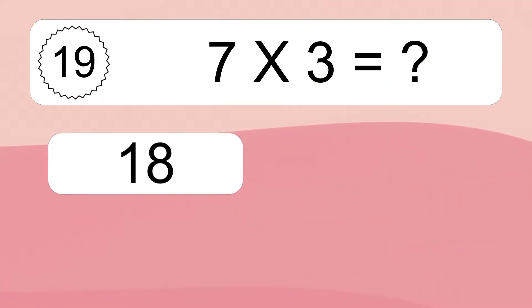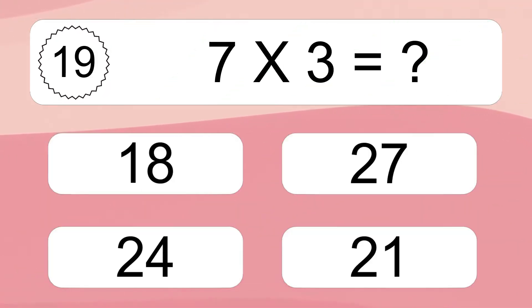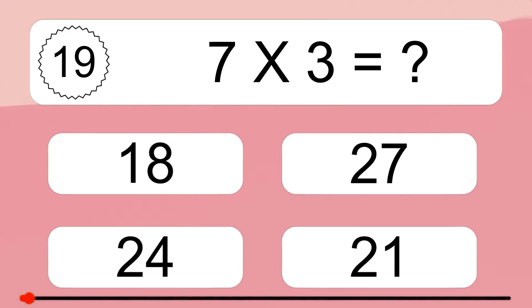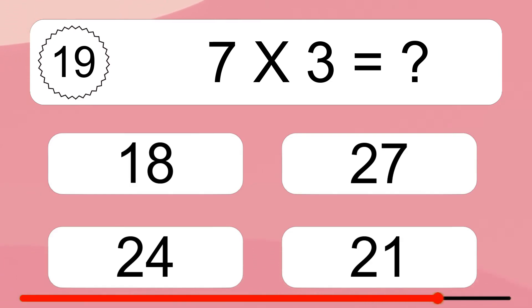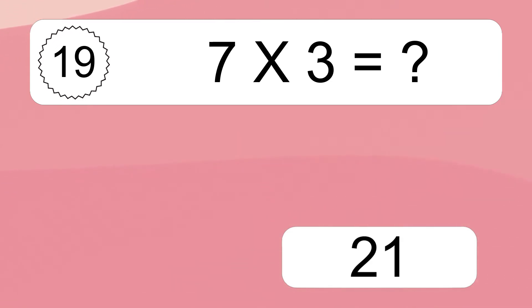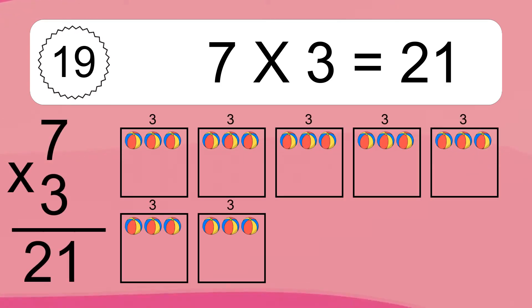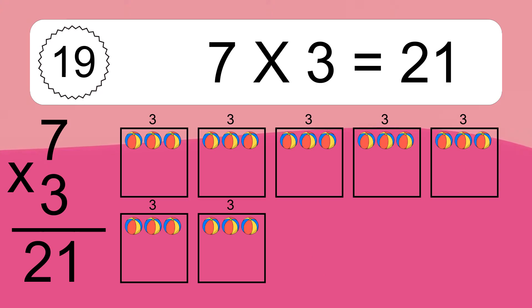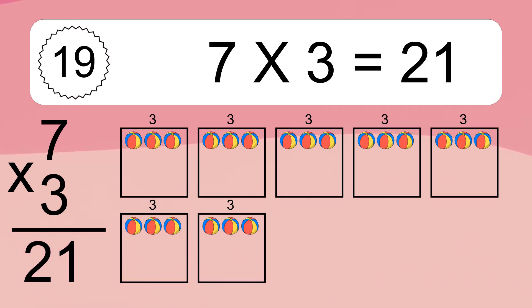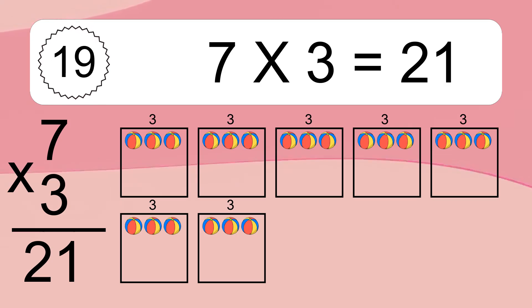7 times 3 equals what? 7 times 3 equals 21. We have 7 boxes, and each box has 3 colorful balls inside. If you count all the balls in all the boxes together, you will have 7 times 3 balls.